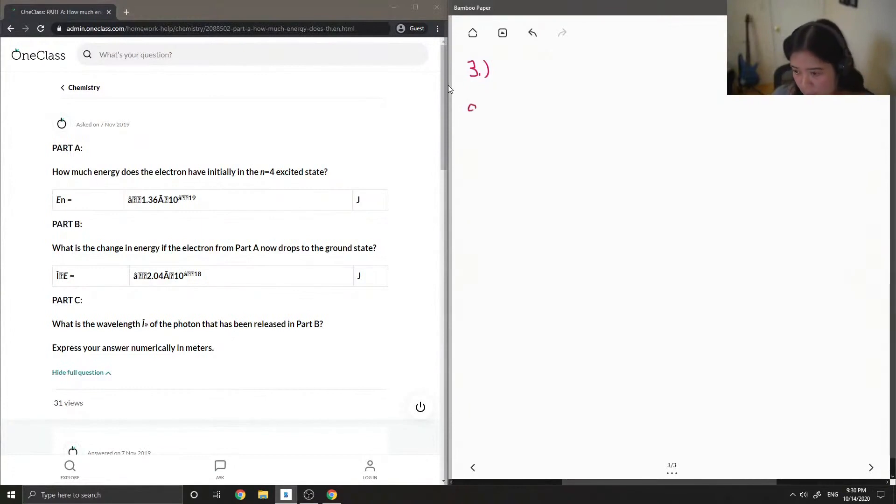Okay, so on to 3A. How much energy does the electron have initially in the n equals 4 excited state? So I'm going to use this equation here. Where E is equal to the energy